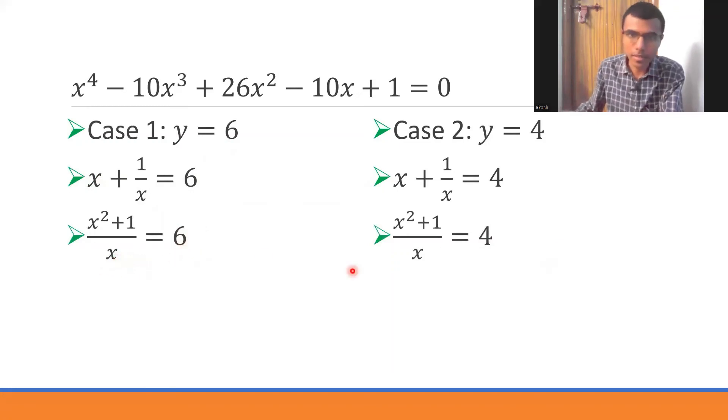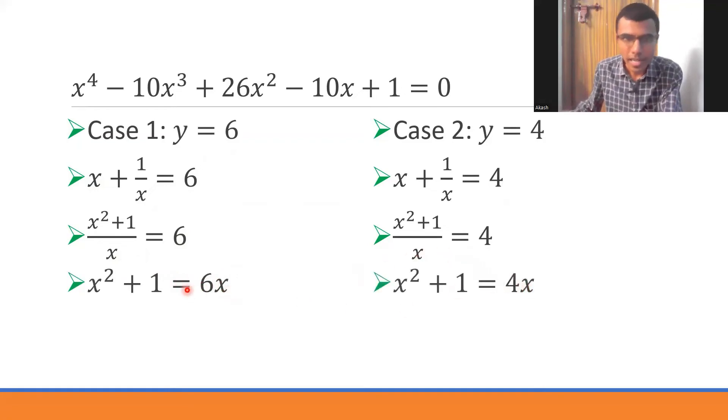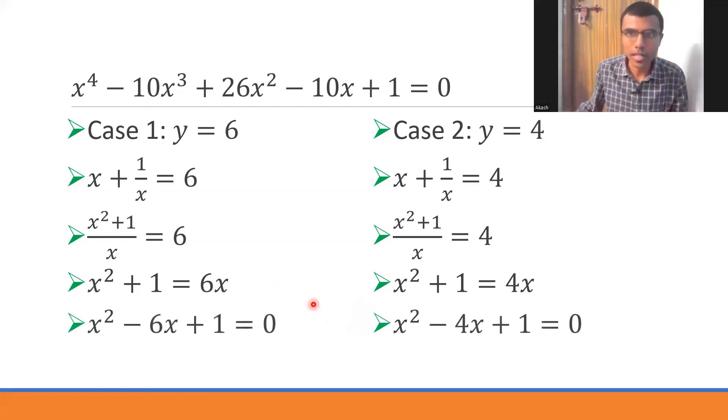Then send this x here and here also. x² + 1 = 6x, x² + 1 = 4x. And then get this 6x here, get this 4x here. These are another two quadratic equations.